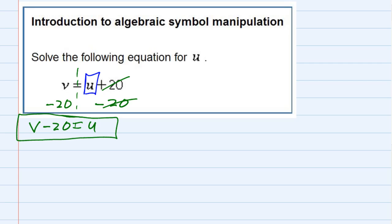Again, I can't combine them because one's a variable and the other is just a number, so they're not like terms. u equals v minus 20.